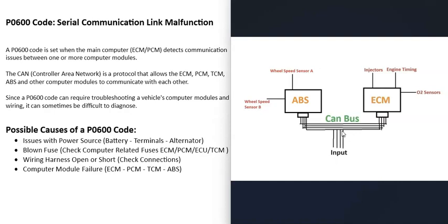The way they communicate is through what's called a CAN bus, though there can be other types of buses. The CAN bus is all the wires that run between the computer control modules, along with where they plug in and the protocol they use. You can think of it like ethernet running throughout a home. When you get the P0600 code, the main computer — the ECM or PCM — is detecting that one or more modules are not communicating for some reason.